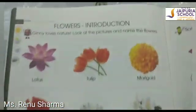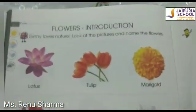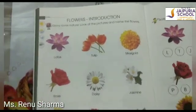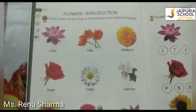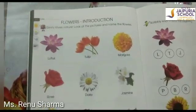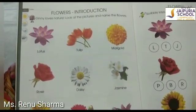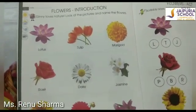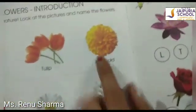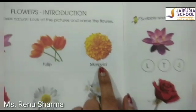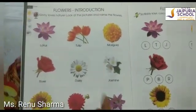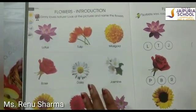And next, this is the tulip flower. Which flower? Tulip flower. It is oval in shape, and it is generally red, pink, yellow, or white. And now, the third flower is marigold. Marigold is in yellow color or in orange color.